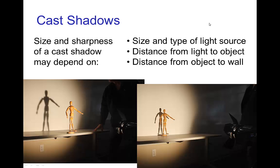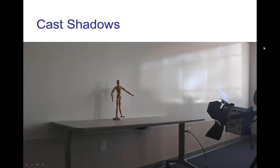The size and sharpness of a cast shadow may depend on the size and type of the light source, the distance from the light to the object that's casting the shadow, and the distance from that object to the wall or whatever surface the shadow is being cast upon.